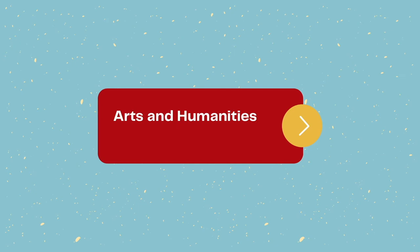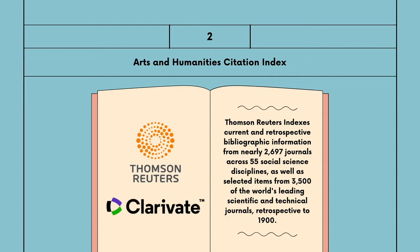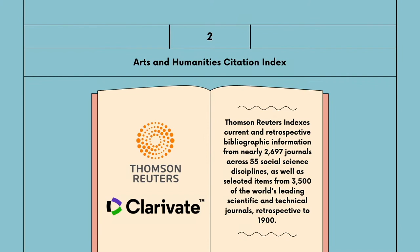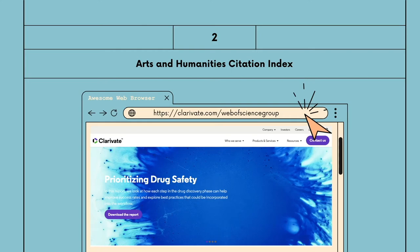Arts and Humanities Citation Index — Thompson Reuters indexes current and retrospective bibliographic information from nearly 2,697 journals across 55 social science disciplines, as well as selected items from 3,500 of the world's leading scientific and technical journals, retrospective to 1900s. These can be accessed at thompsonreuters.com or clarivate.com currently.